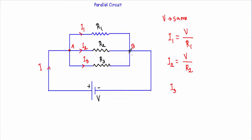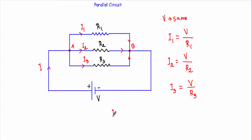To calculate I3, the current flowing through R3, I take the voltage difference across the two ends of R3, which is equal to V, divided by the value of resistor R3. Now if I calculate total current I, the total current will be the sum of the individual currents flowing through each resistor: I = I1 + I2 + I3.